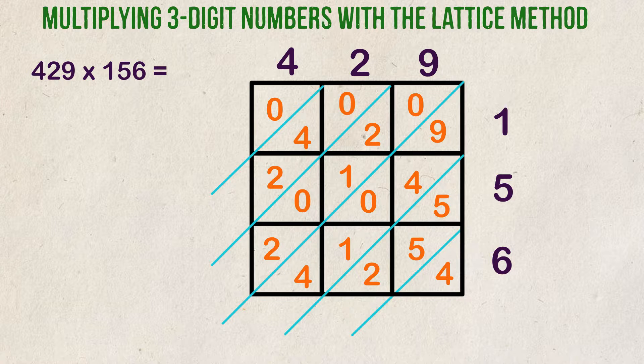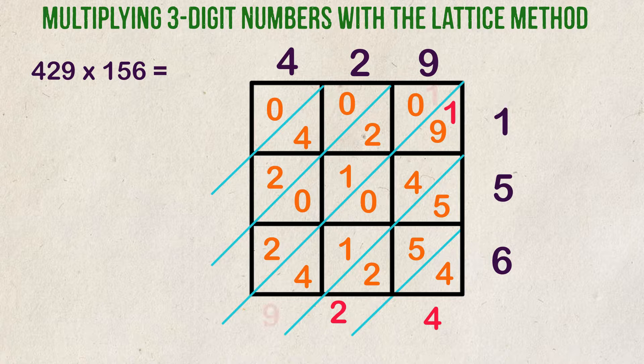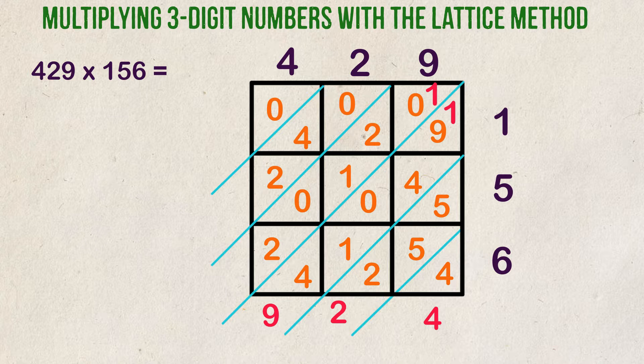We add our numbers up starting from the right-hand side. Four is just four. Two plus five plus five is twelve. Put down the two. Carry the one to the next section. Four plus one plus zero plus four plus nine plus the one we carried over equals nineteen. Put the nine down here. Carry the one to the next section.